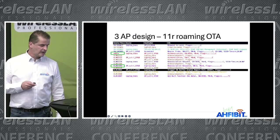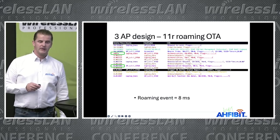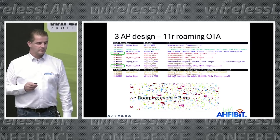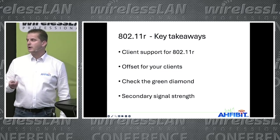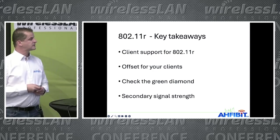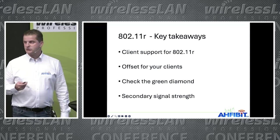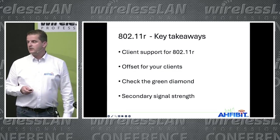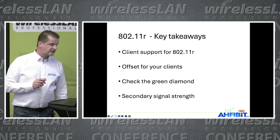Testing again, I had my reference frame, the reassociation response, and no four-way handshake. I completed the roaming in just 8 milliseconds — exactly what I wanted. The key takeaways: check whether your client supports 11r, check your dBm offsets, check where roaming events happen using the green diamond, and check your secondary signal strength. Your network has to be ready — a bad design cannot be fixed with configuration alone.